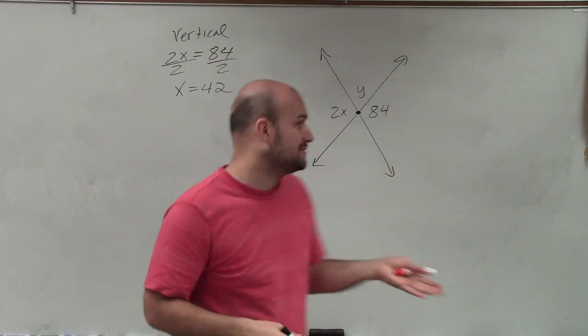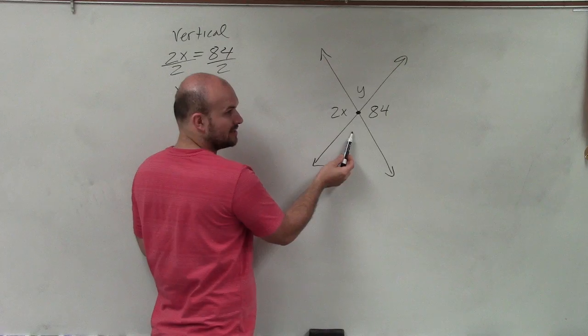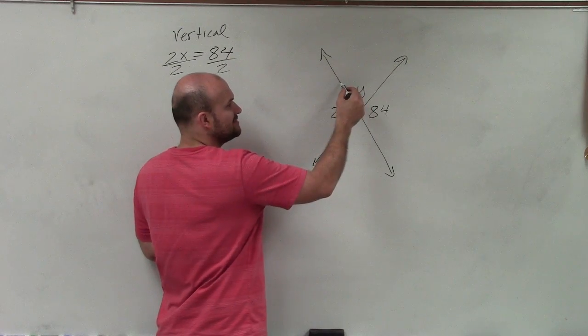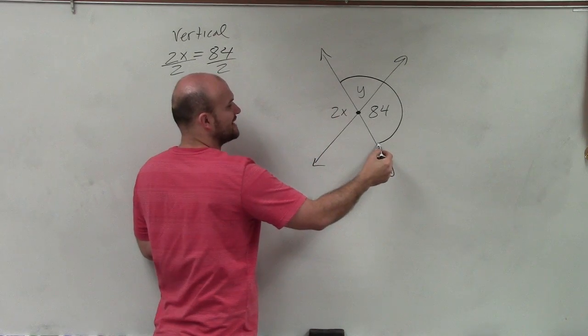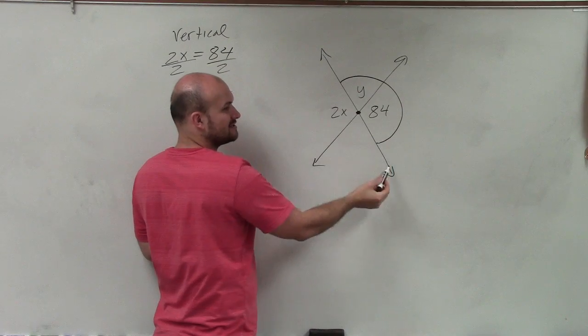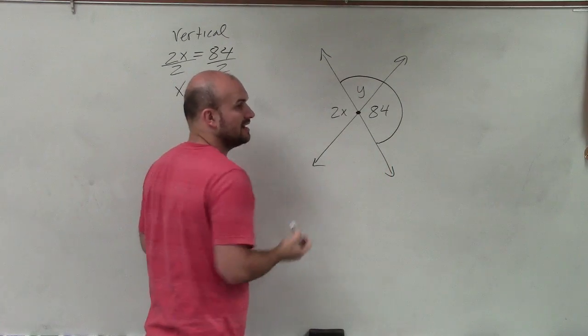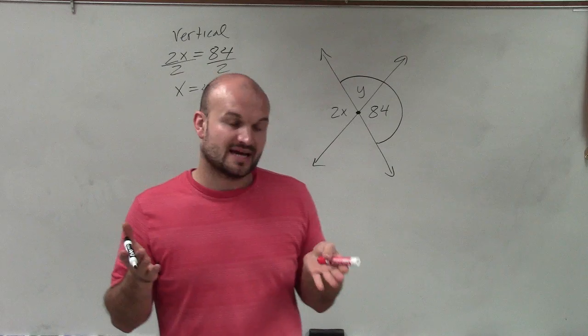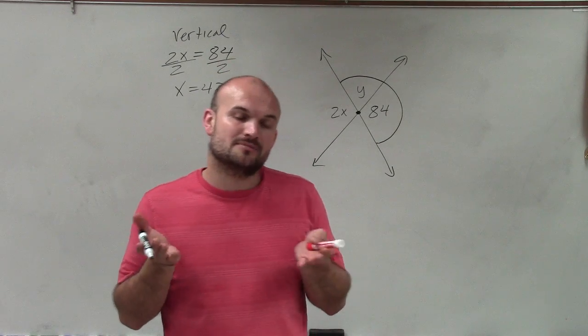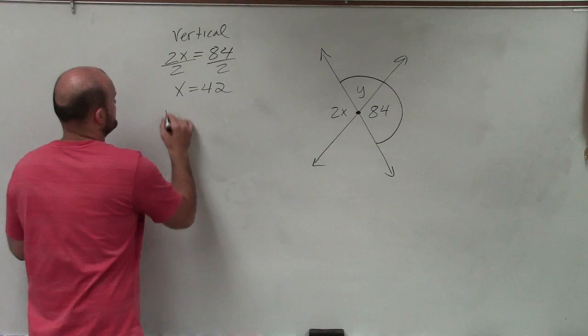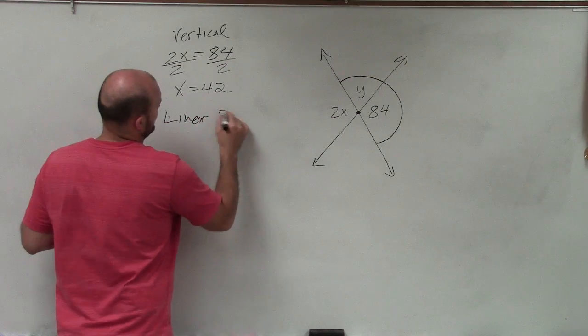The next one is let's go and figure out y. Well, y does not have a vertical angle with it. However, I do see that y and 84 over here creates a straight line, which is a linear pair. And I know that a linear pair, two angles that form a linear pair are supplementary.